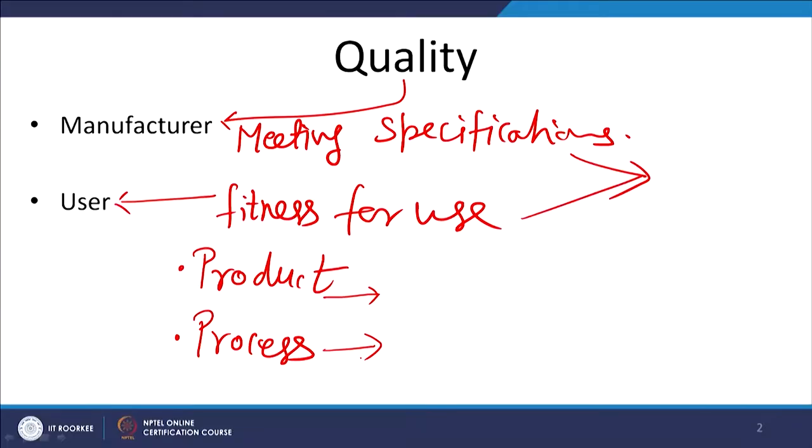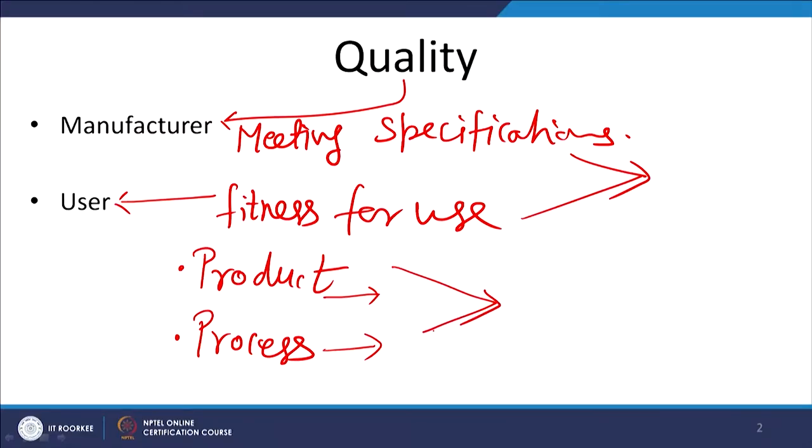This is also not going to serve the purpose, because ultimately the product which will come out of this excellent process has poor result — it is not going to fulfil the customer's purpose, and the customer will not be willing to purchase it. So we require simultaneously both a very good product that can meet customer requirements, and that product should be produced by a process which is able to deliver that type of product. Product quality and process quality are both required simultaneously to achieve the strategic role of quality.